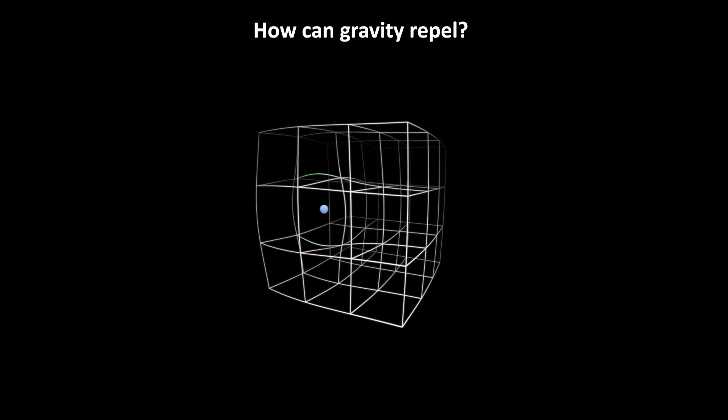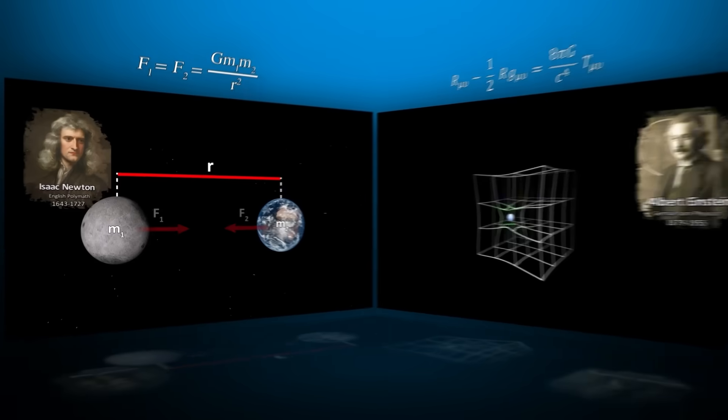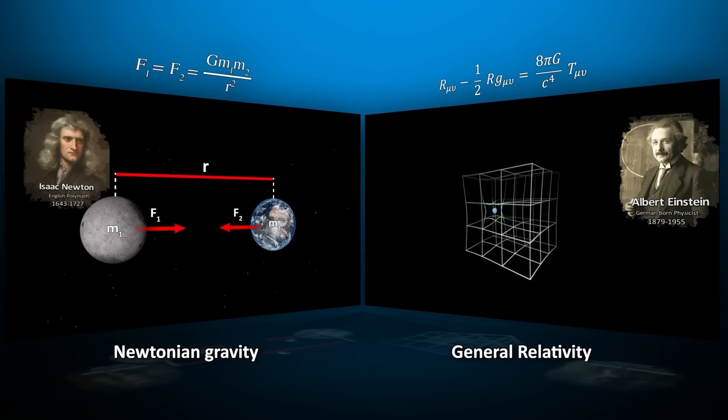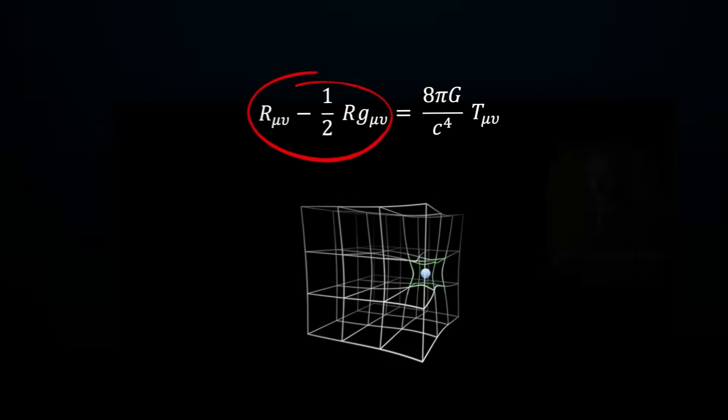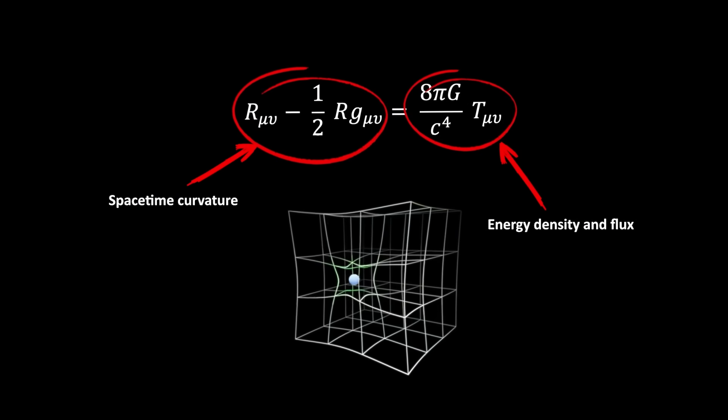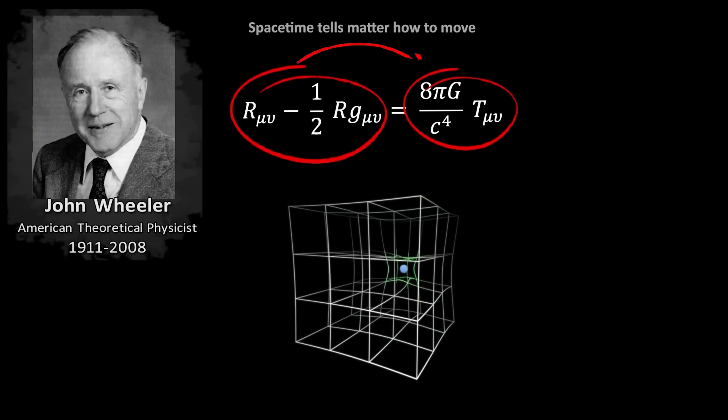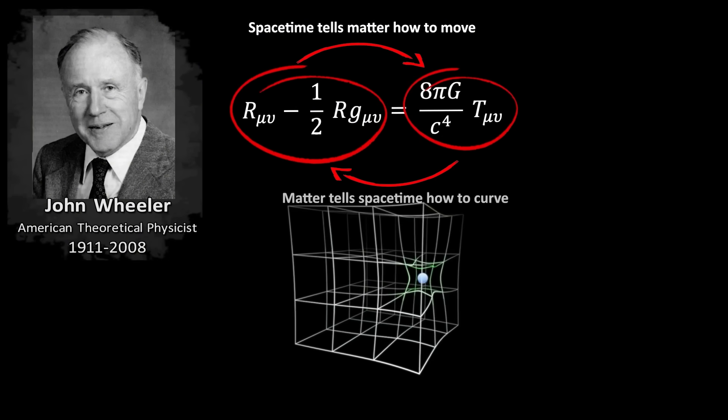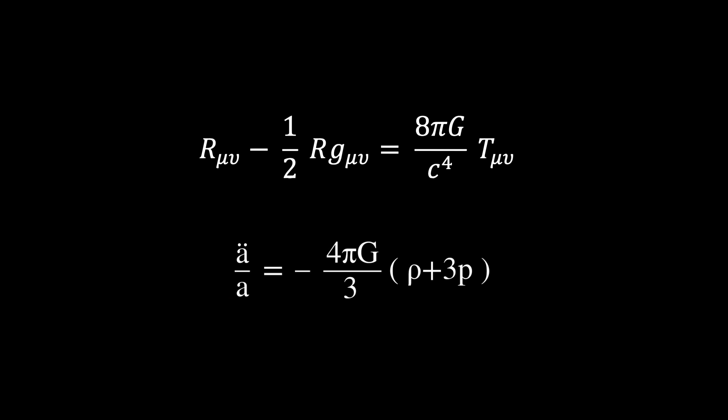Now let's get back to answering the question of whether repulsive gravity is fundamental. To answer that question, let's first answer the question, how can gravity repel? A key difference between Newtonian gravity and general relativity is that in Einstein's theory, the source of gravity is not mass, but energy. This relationship is expressed by the field equations. The part on the left-hand side describes the local curvature of spacetime, while the right-hand side encodes the density and flux of energy and momentum. The equation was summed up in a famous saying by the physicist John Wheeler: spacetime tells matter how to move, and matter tells spacetime how to curve.